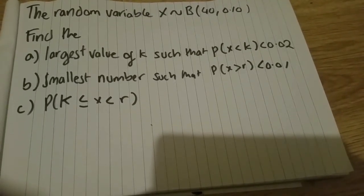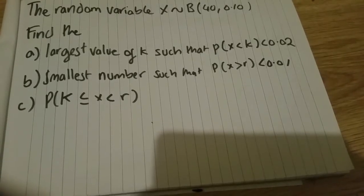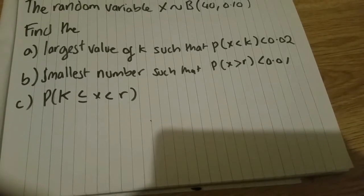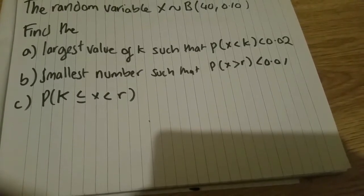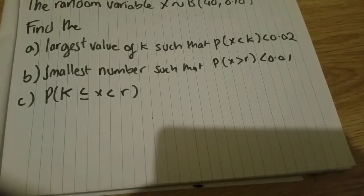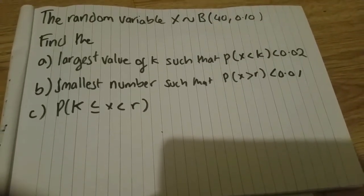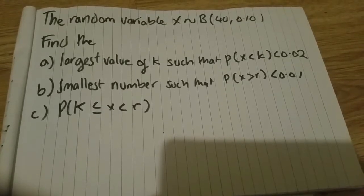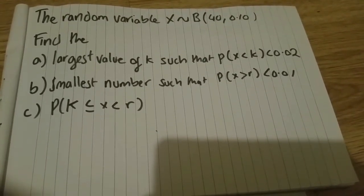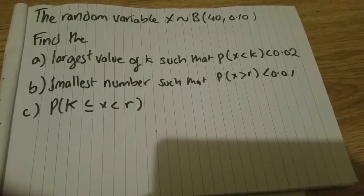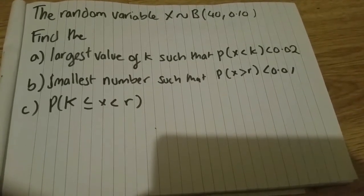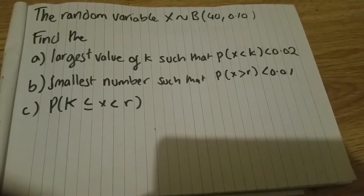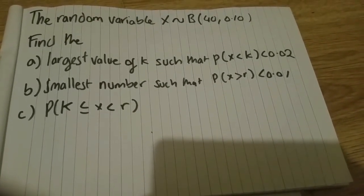We're asked three separate questions. Find the largest value of k such that P(X<k) is less than 0.02. Find the smallest number r such that P(X>r) is less than 0.01. And finally, the probability of X being between k and r once we've worked out what k and r actually are.